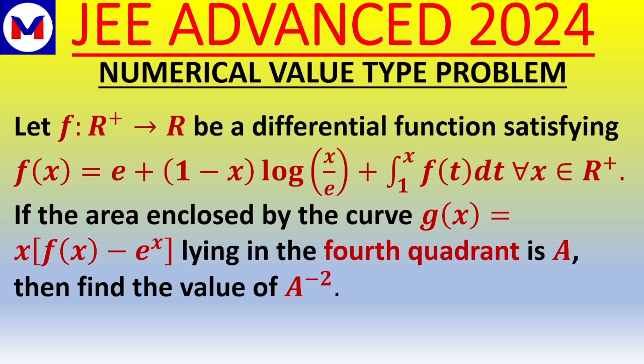Hello, good evening. The next question of the series is a numerical value type problem. Let f from R+ to R be a differentiable function satisfying f(x) = e + (1 - x)·ln(x/e) + integral from 1 to x of f(t) dt, for all x in R+. If the area enclosed by the curve g(x) = x·f(x) - e^x lying in the fourth quadrant is A, then find the value of A^(-2), that is 1/A².